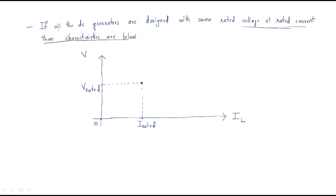Hello everyone. In this session we will discuss different types of DC generators with their characteristics. All DC generators are designed with the same rated voltage and rated current. The characteristics are as follows.